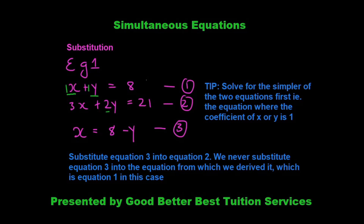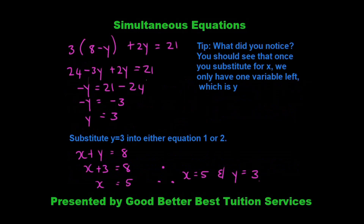We substitute this third equation into the second equation — we never substitute back into the equation we derived it from, which was equation 1. So in equation 2, wherever we see x, we replace it with 8 minus y. So 3 times (8 minus y) plus 2y is equal to 21. Once you substitute, you've eliminated one variable, which means you can solve for the other. We get 24 minus 3y plus 2y is equal to 21.